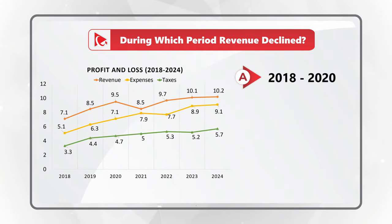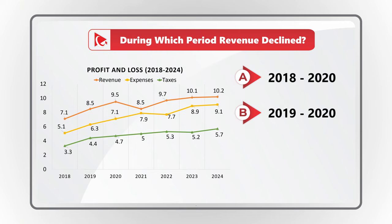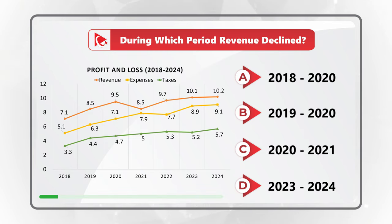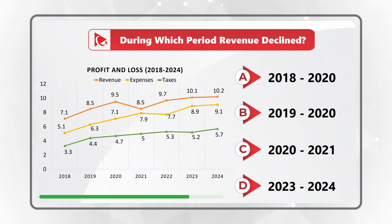Choice A: the period between 2018 and 2020. Choice B: the period between 2019 and 2020. Choice C: the period between 2020 and 2021. And choice D: the period between 2023 and 2024. Give yourself a little bit of time — maybe pause this video — to see if you can come up with the solution.